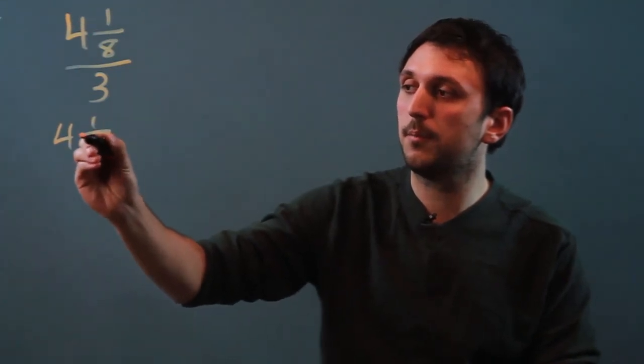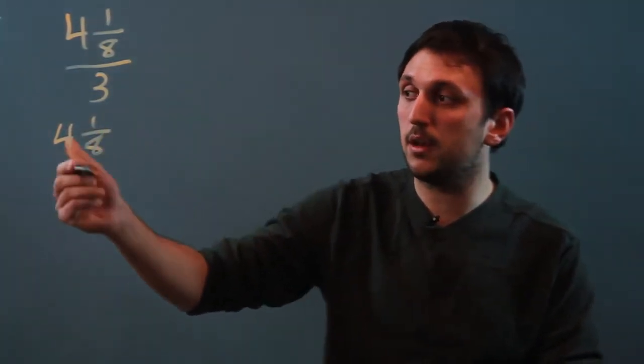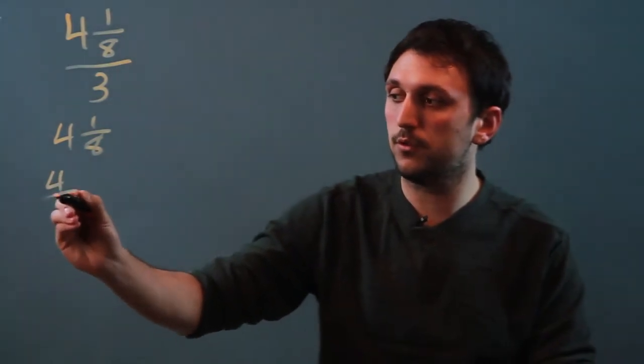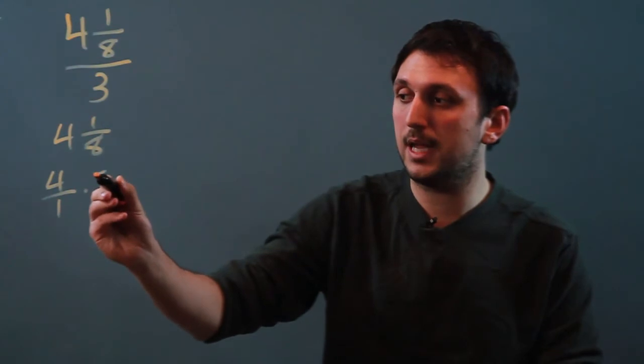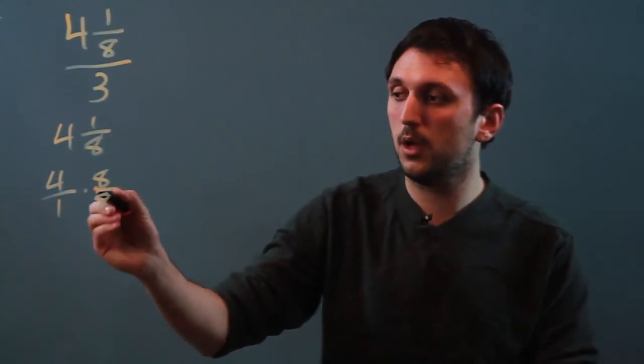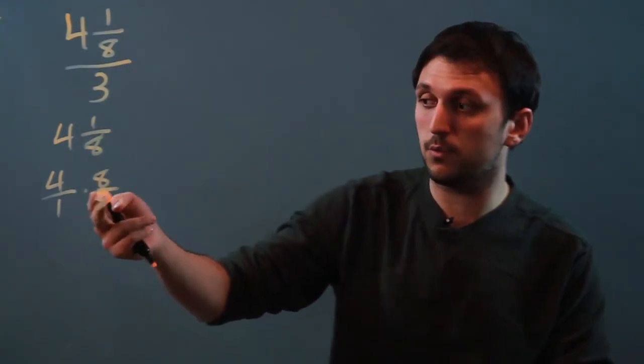So 4 and 1/8 can also be called... we want that to all be over 8. So we take this 4, which is 4 over 1, and we're going to do what's called rationalizing. We're going to multiply it by 8 over 8, which is like multiplying it by 1, so it doesn't change the value, it just changes how it looks.